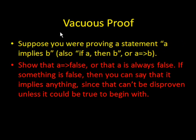Vacuous proof. Suppose you're trying to prove a statement A implies B. You would try to prove that A implies false, or that A is always false. If something is false, then you can say that it implies anything technically, because it can't be disproven unless A was true to begin with.